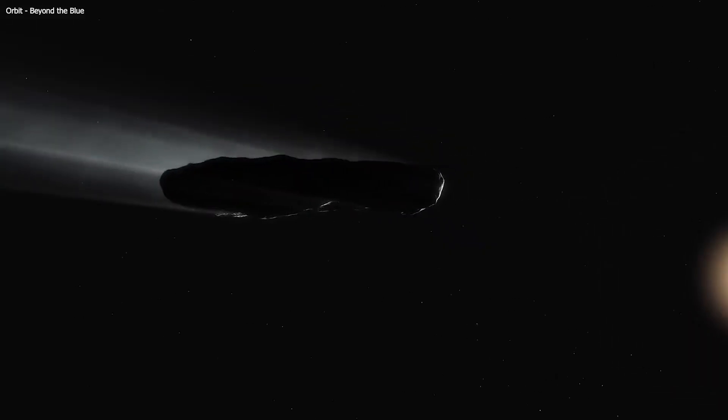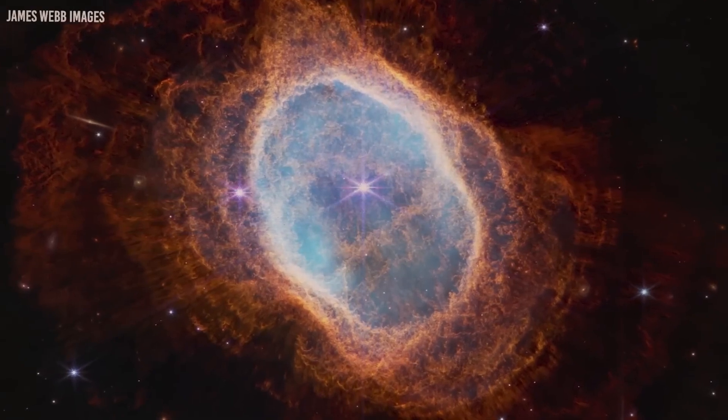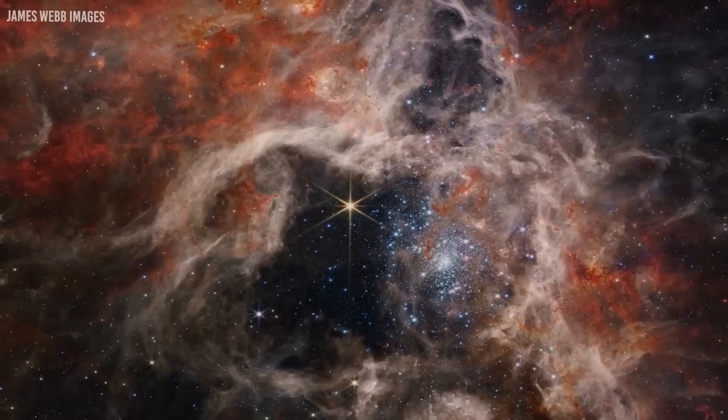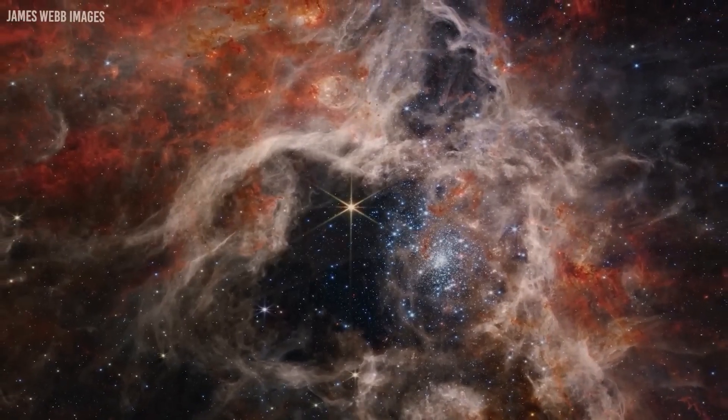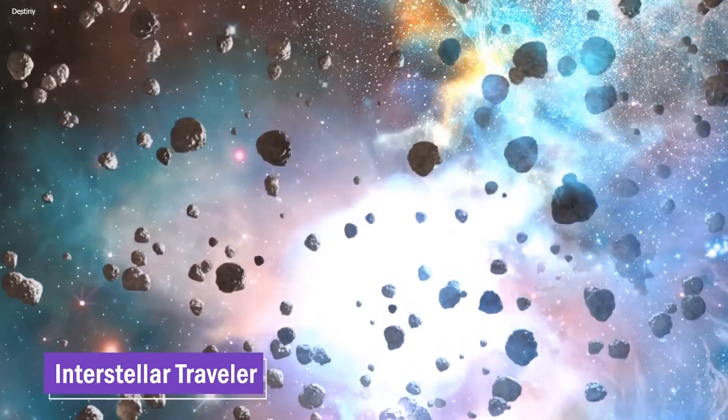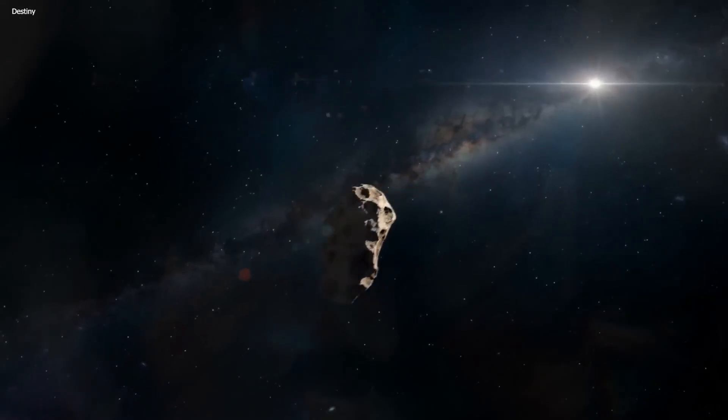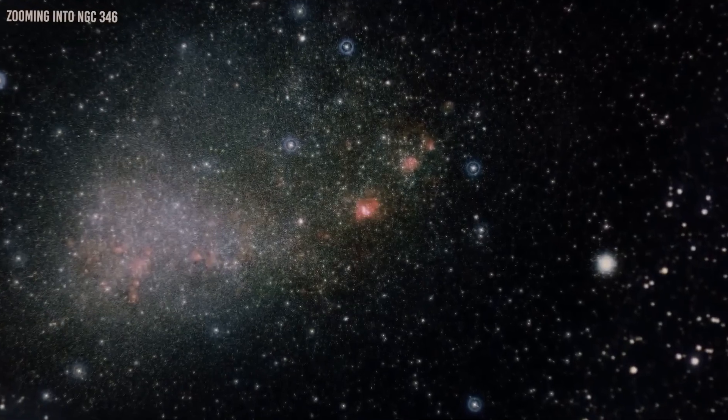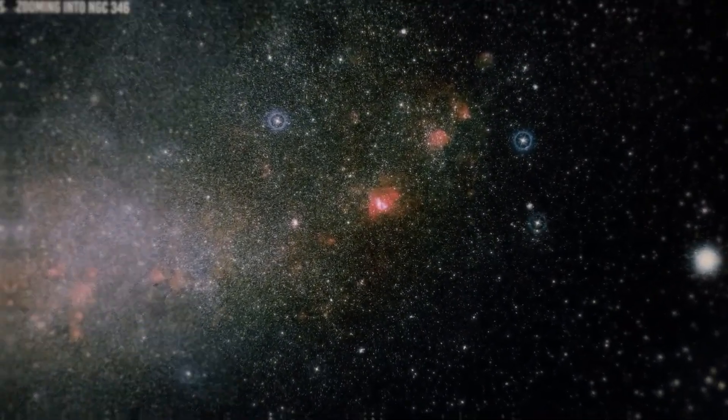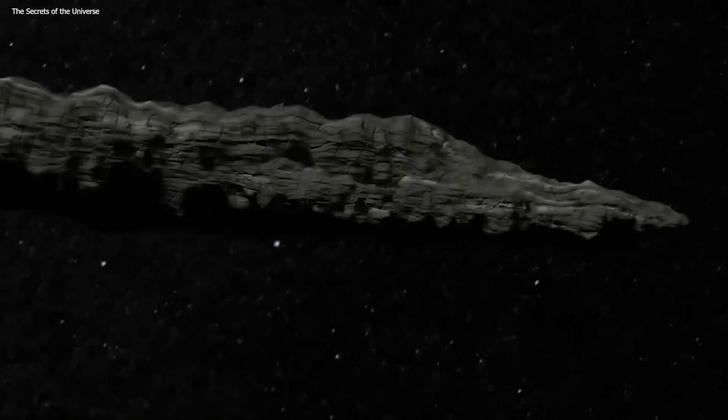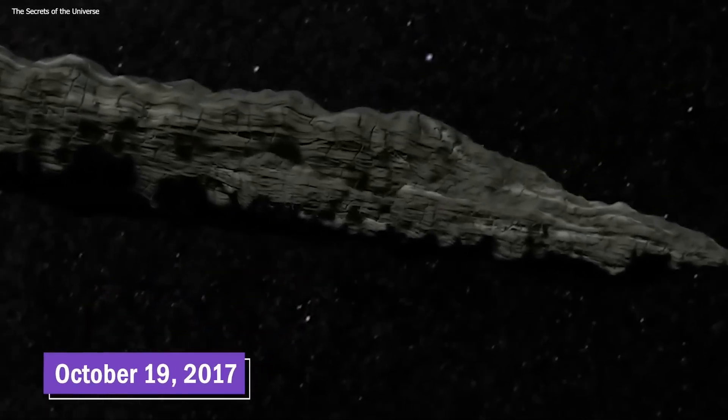This extraordinary revelation unfolded on October 19, 2017, when the Pan-STARRS-1 telescope in Hawaii detected Oumuamua, marking the first time astronomers identified an object originating from outside our solar system. Even more astounding, it had made its way into our solar system and was headed straight for Earth. Oumuamua's unexpected arrival quickly became a significant event, holding immense potential for unlocking the mysteries of our cosmic surroundings.